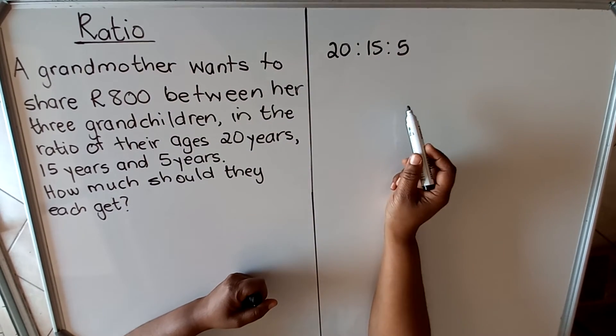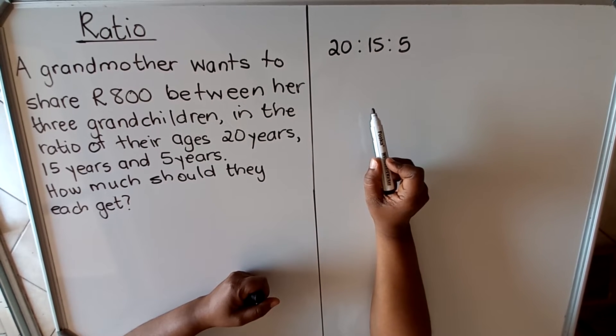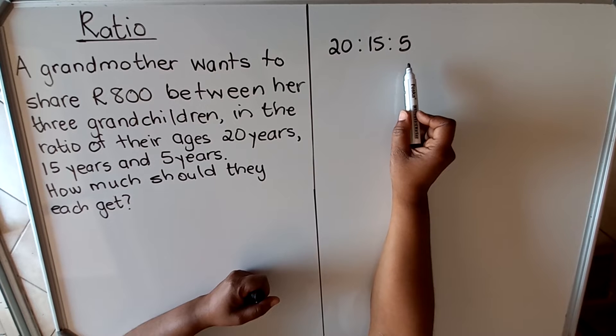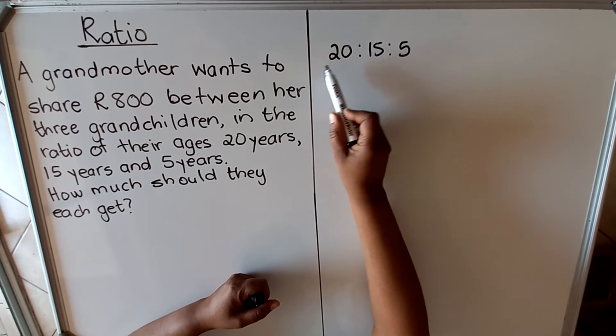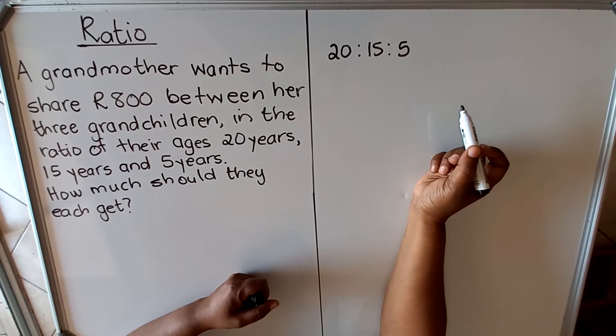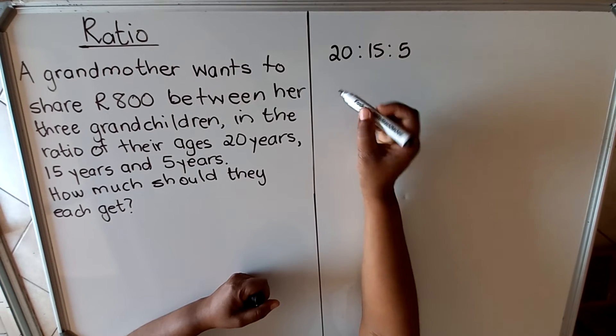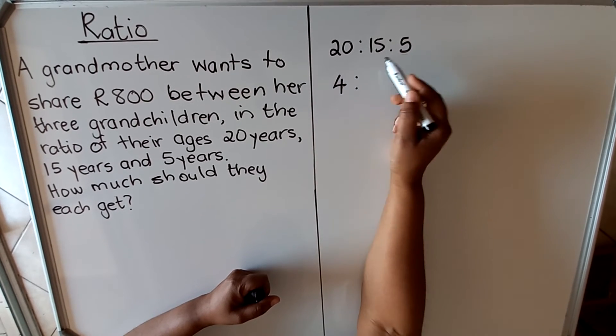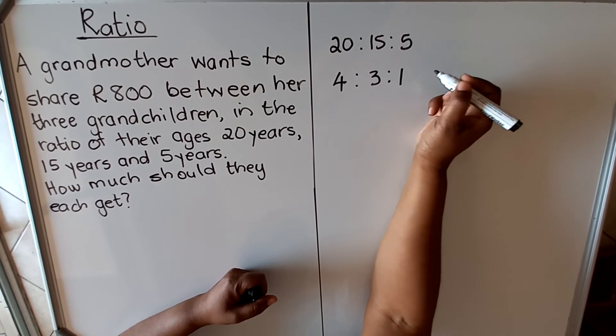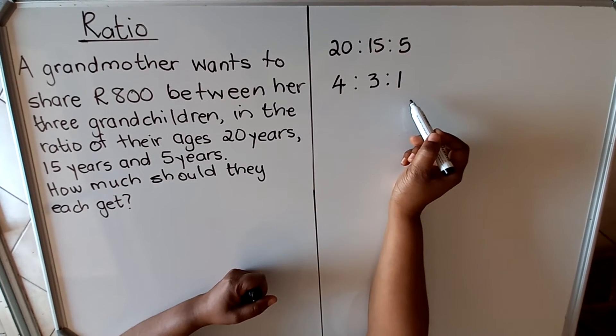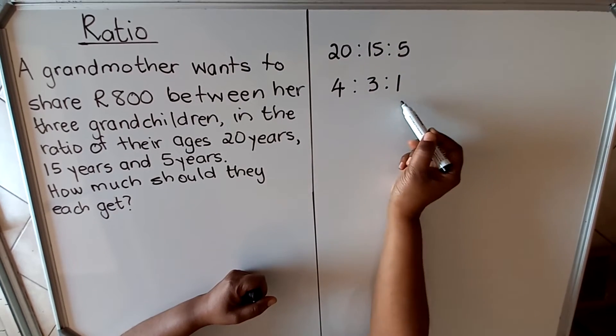When we are dealing with the ratio, you always write it in its simplest form. So the best way to do that, you look at your ratio and you find a common factor. Usually the smaller one will be the common factor, but not in all instances. So in this instance, it's true. So you're going to divide 20 by 5 and get 4, you divide 15 by 5 and get 3, and then you divide 5 by 5 and get 1. So this is the simplified ratio.